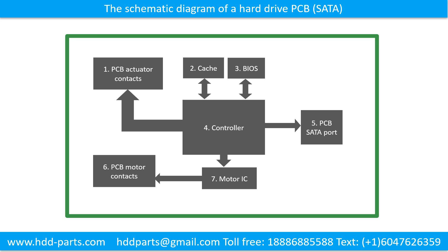The schematic diagram of a hard drive printed circuit board. We use a hard drive as an example. This picture shows the schematic diagram and the basic components of the hard drive. The basic components are: 1. PCB actuator contacts, 2. Cache, 3. BIOS, 4. Controller, 5. PCB setup port, 6. PCB motor contacts, 7. Motor IC.